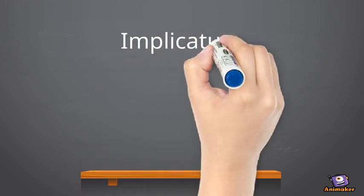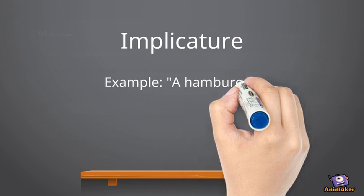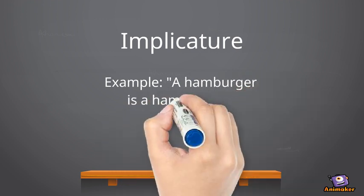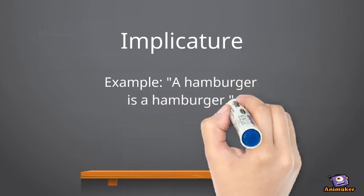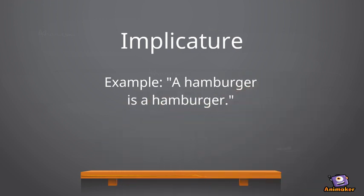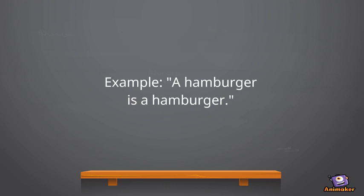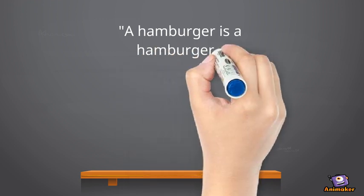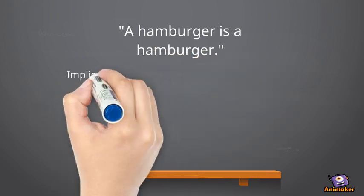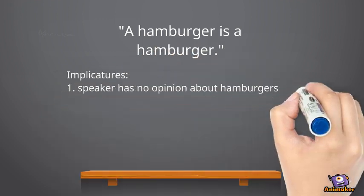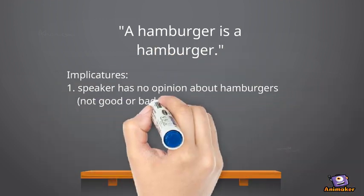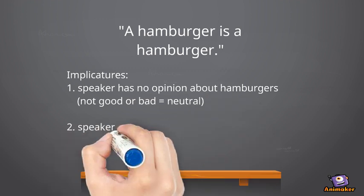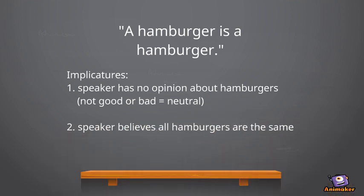In our example we can find two implicatures: no opinion either good or bad of the speaker on hamburgers, and the second implicature is that the speaker thinks all hamburgers are the same. Now let's move on to our next point: the cooperative principle.